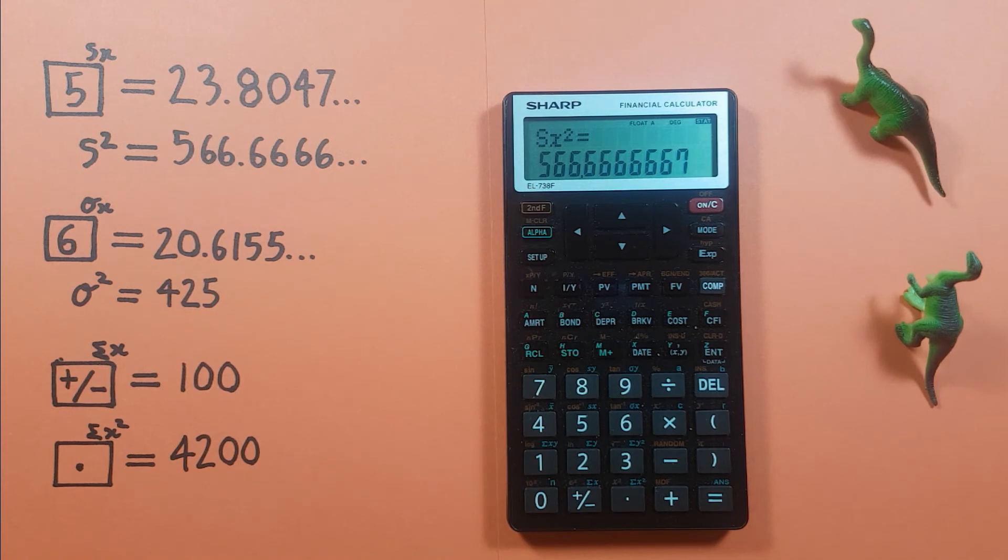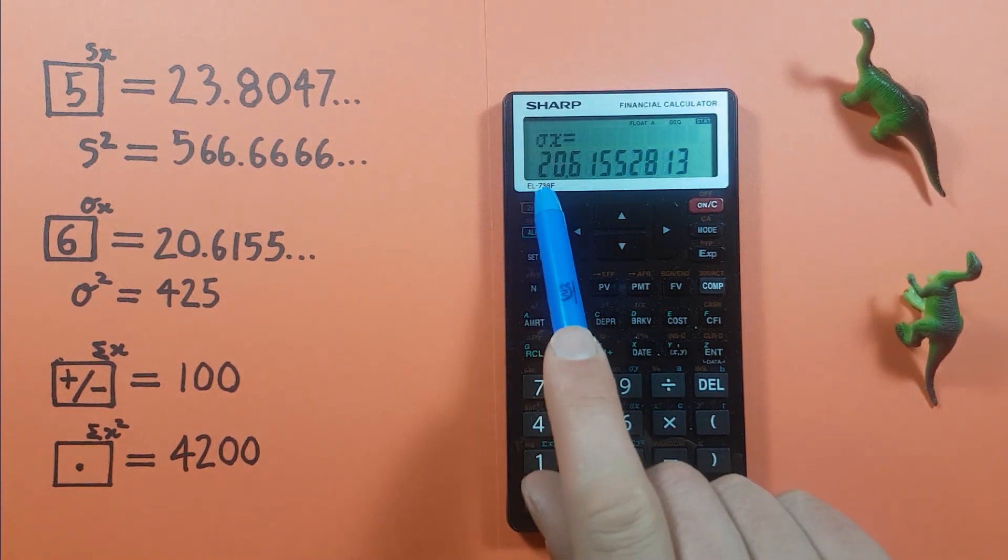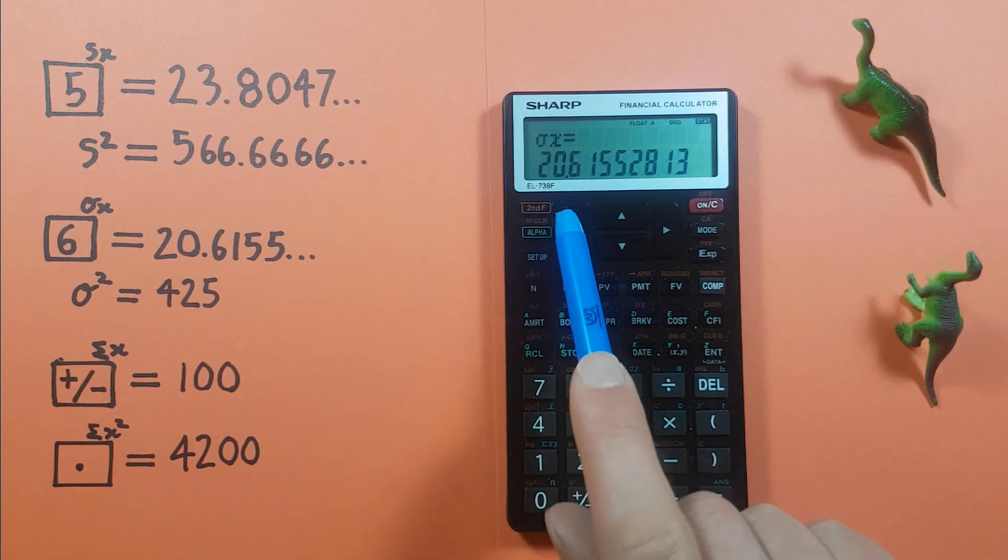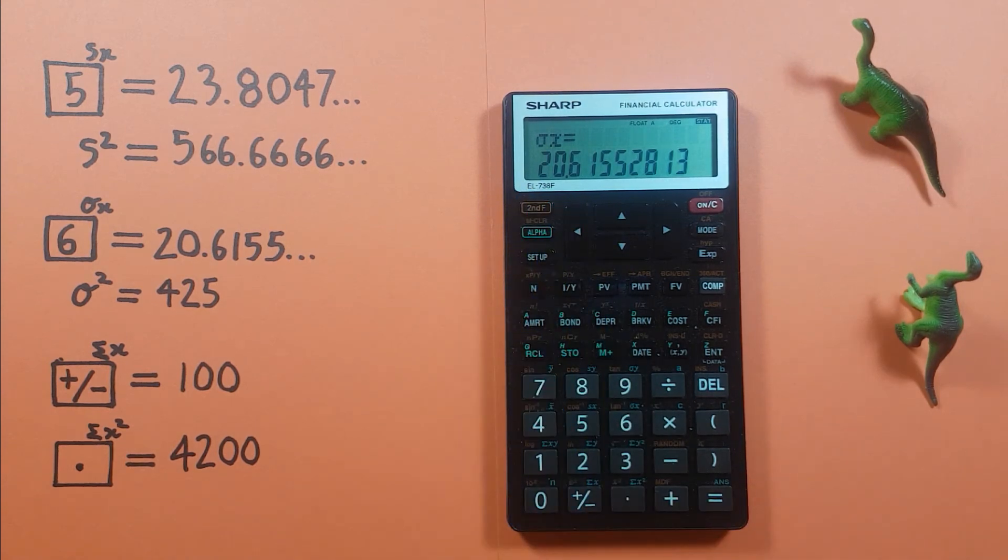Next up we can get our population standard deviation by using the recall key and then the 6 with the small sigma x there and we see we get a population standard deviation of 20.6155 etc.